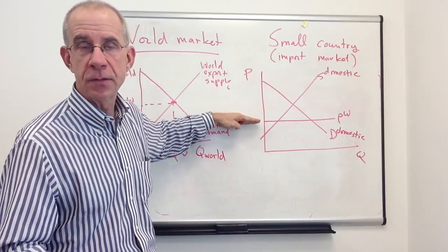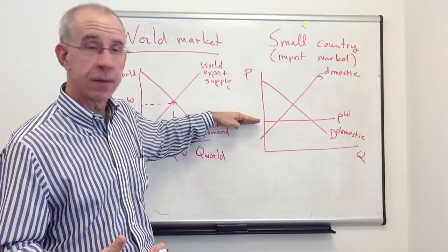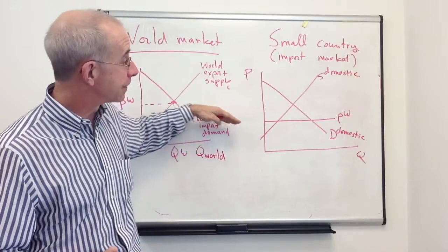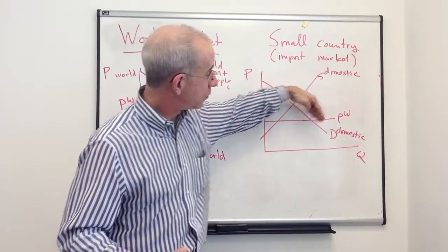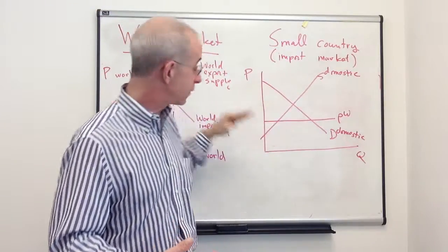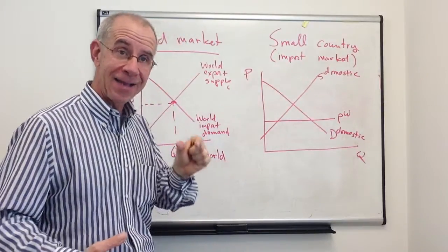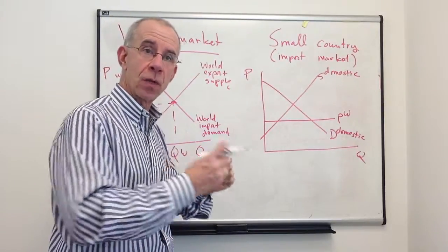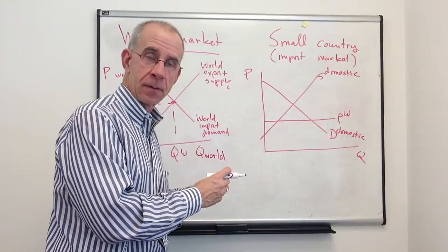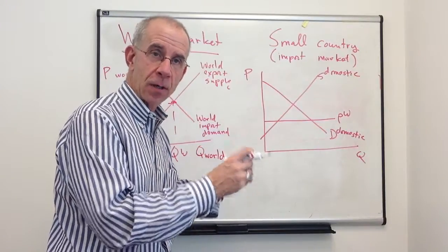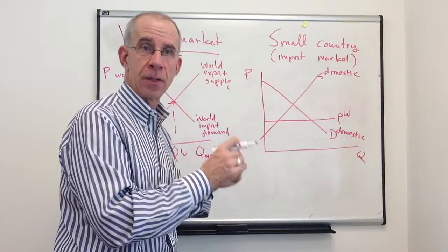And the small country assumption here is going to be represented by a horizontal line that depicts the world price, the take it or leave it price for the domestic economy. And so demand could shift, supply could shift, but that's the world price, that is the only price that foreigners will accept to bring this product into the small importing country.